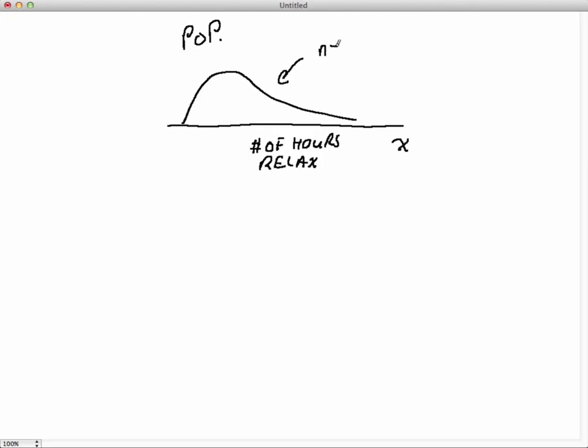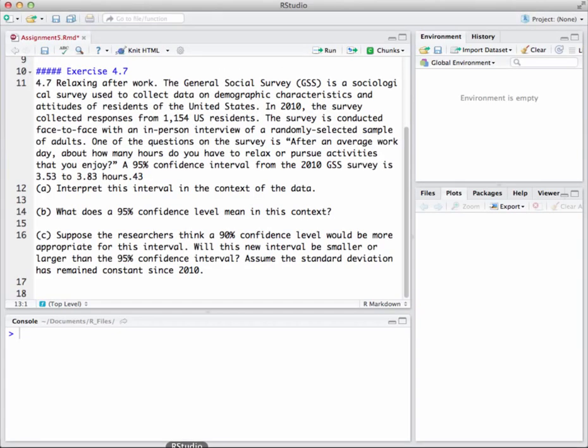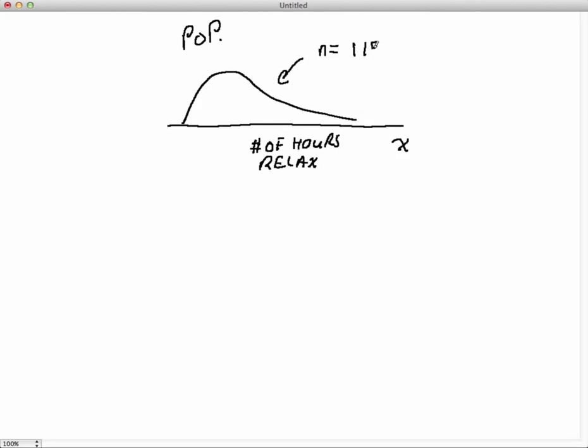What this survey did is they took a sample from this population. They wanted to get an estimate for the average number of hours spent relaxing. When they did that, they took a sample size where n was 1,154. They took all of their responses for their hours spent relaxing and fed those into a machine we'll call x-bar. That machine takes all these numbers, adds them up, and divides by the number of numbers.